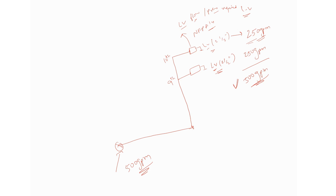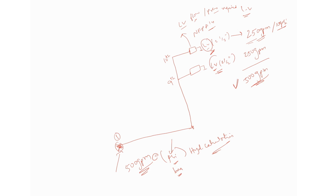We need to have the pressure requirement at the particular landing valve: 100 psi at the remotest valve. That means we need to calculate the head required — in PSI or bar — at the starting node so that the water will reach those particular landing valves with the required pressure of 100 psi.